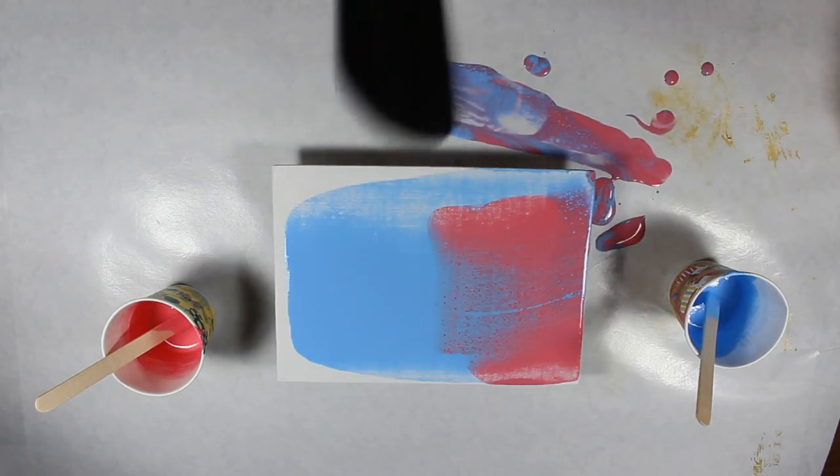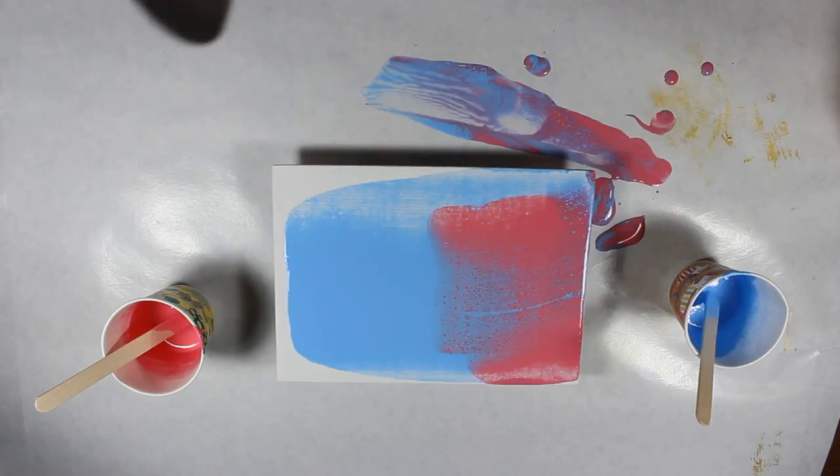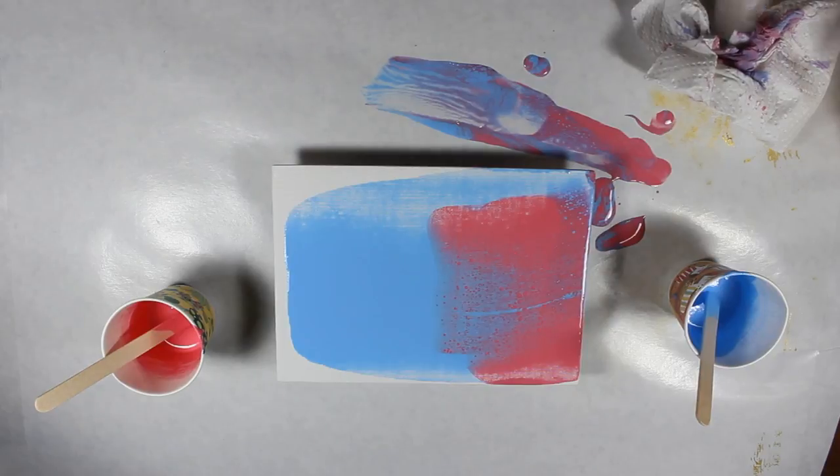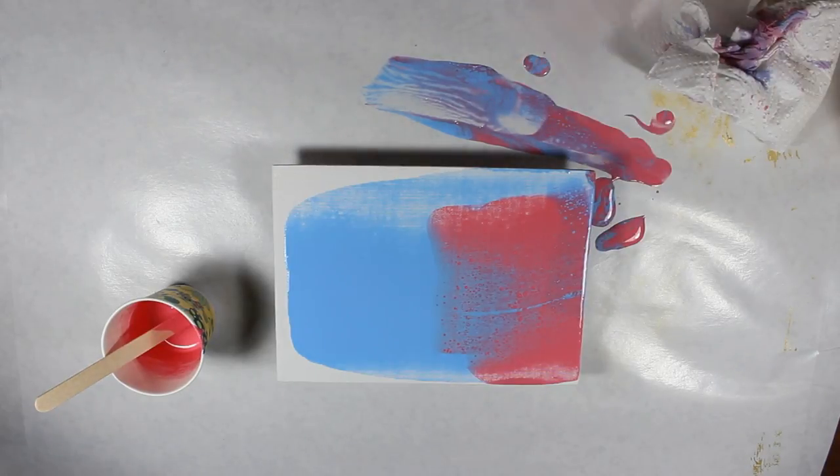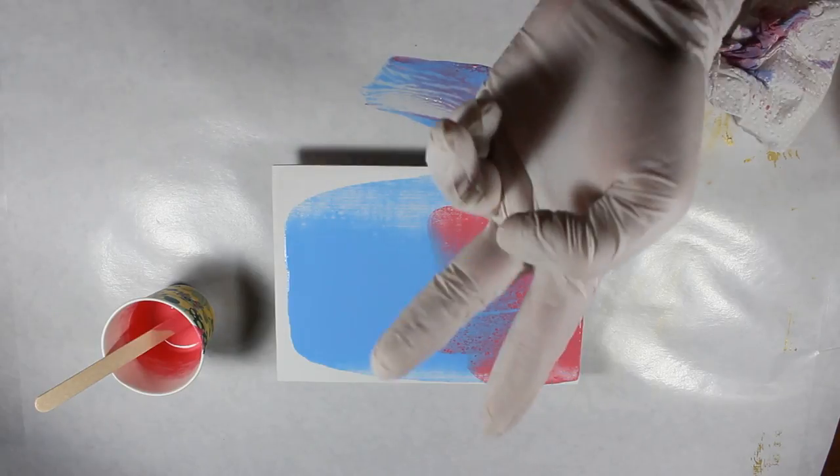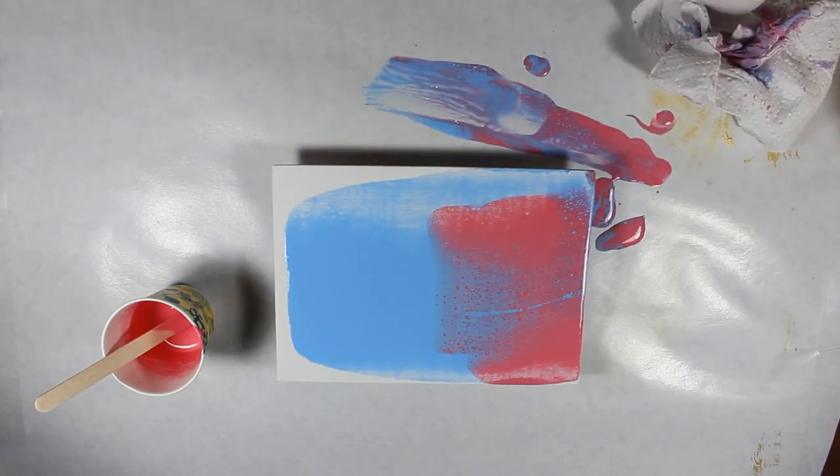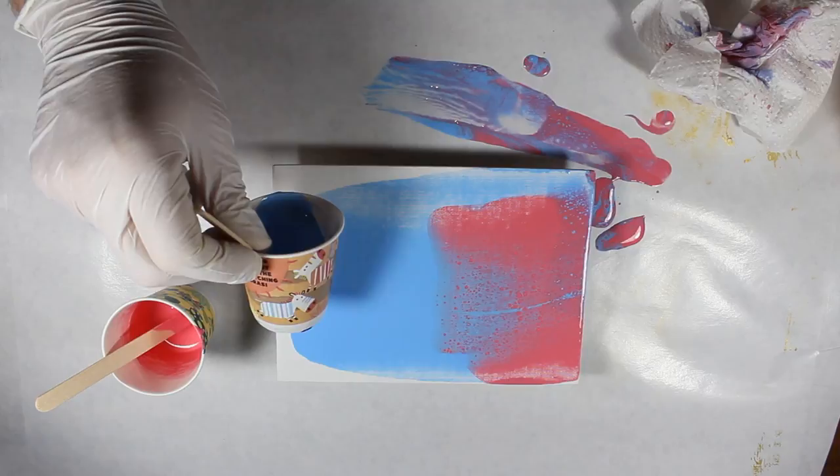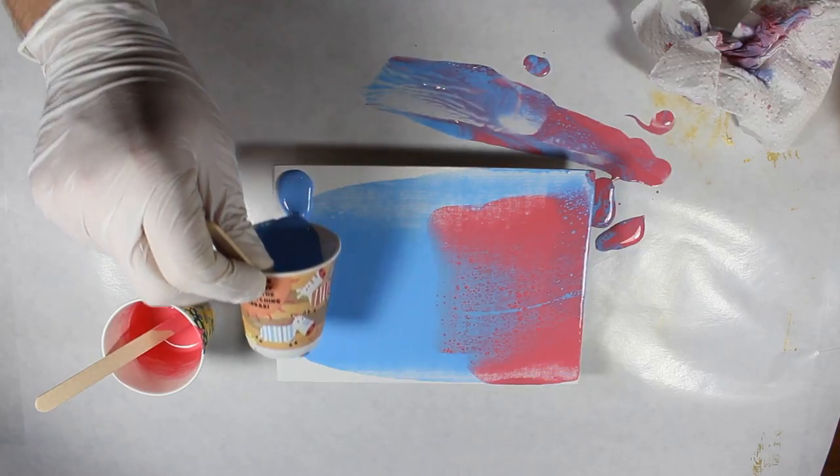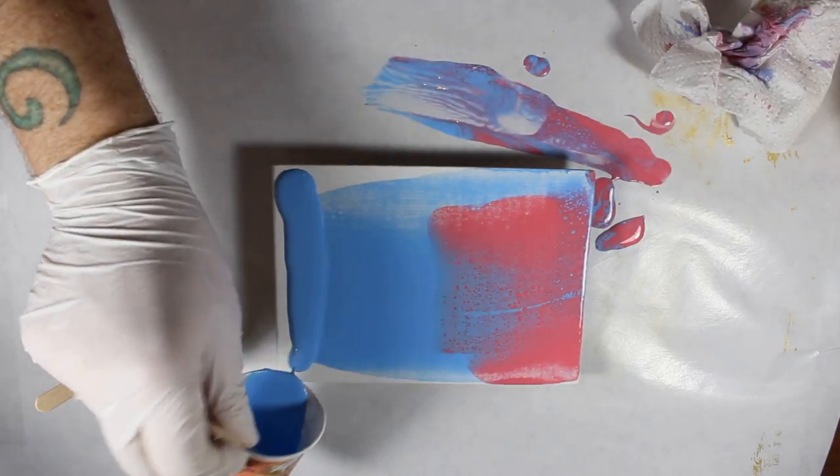I also want to point out that I haven't used any silicone in this mixture. It's exclusively Floetrol and water, yet we still see some cells because cells will simply appear as acrylic paint forces its way through other layers of acrylic paint. That is, at the heart, all you need to make cells.